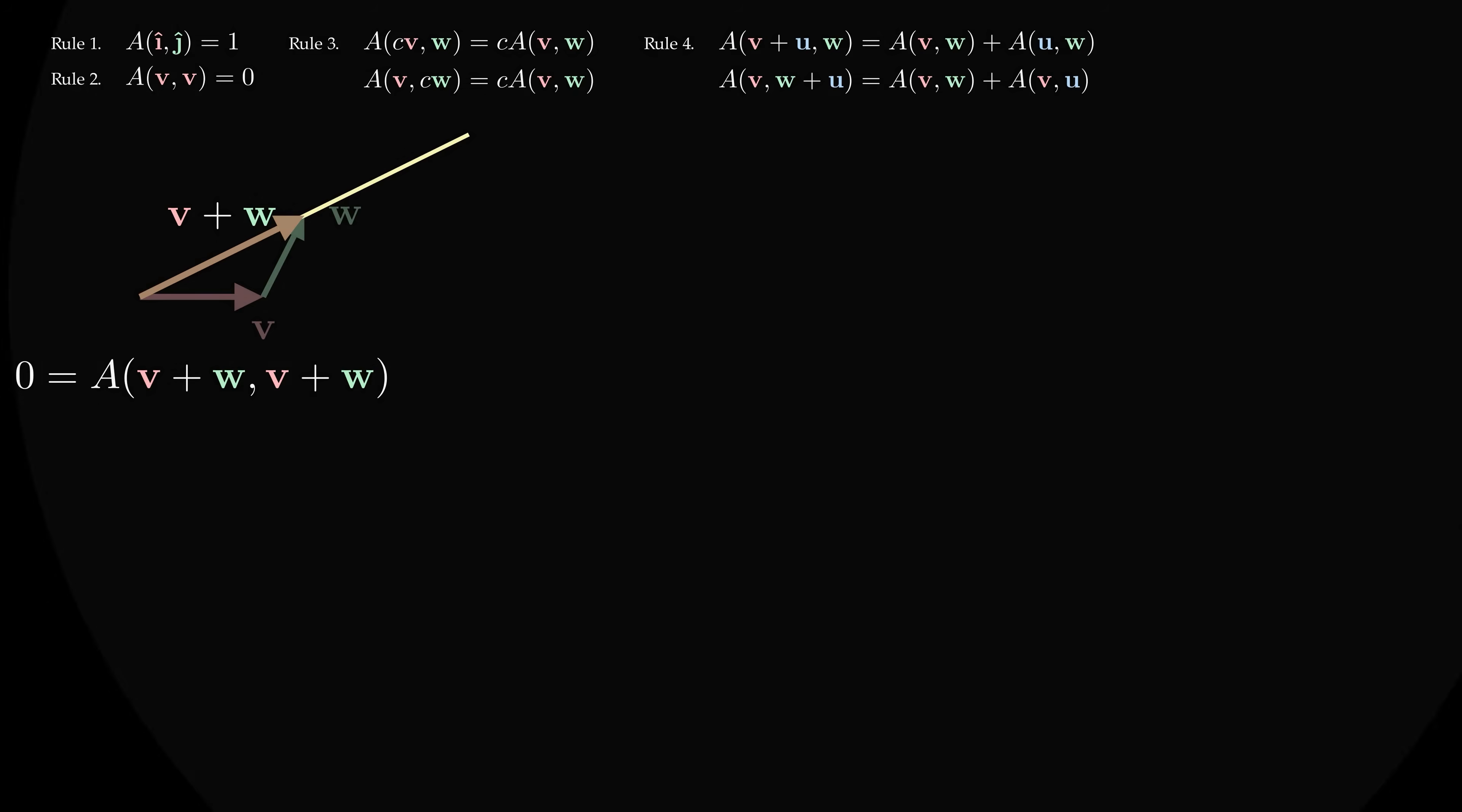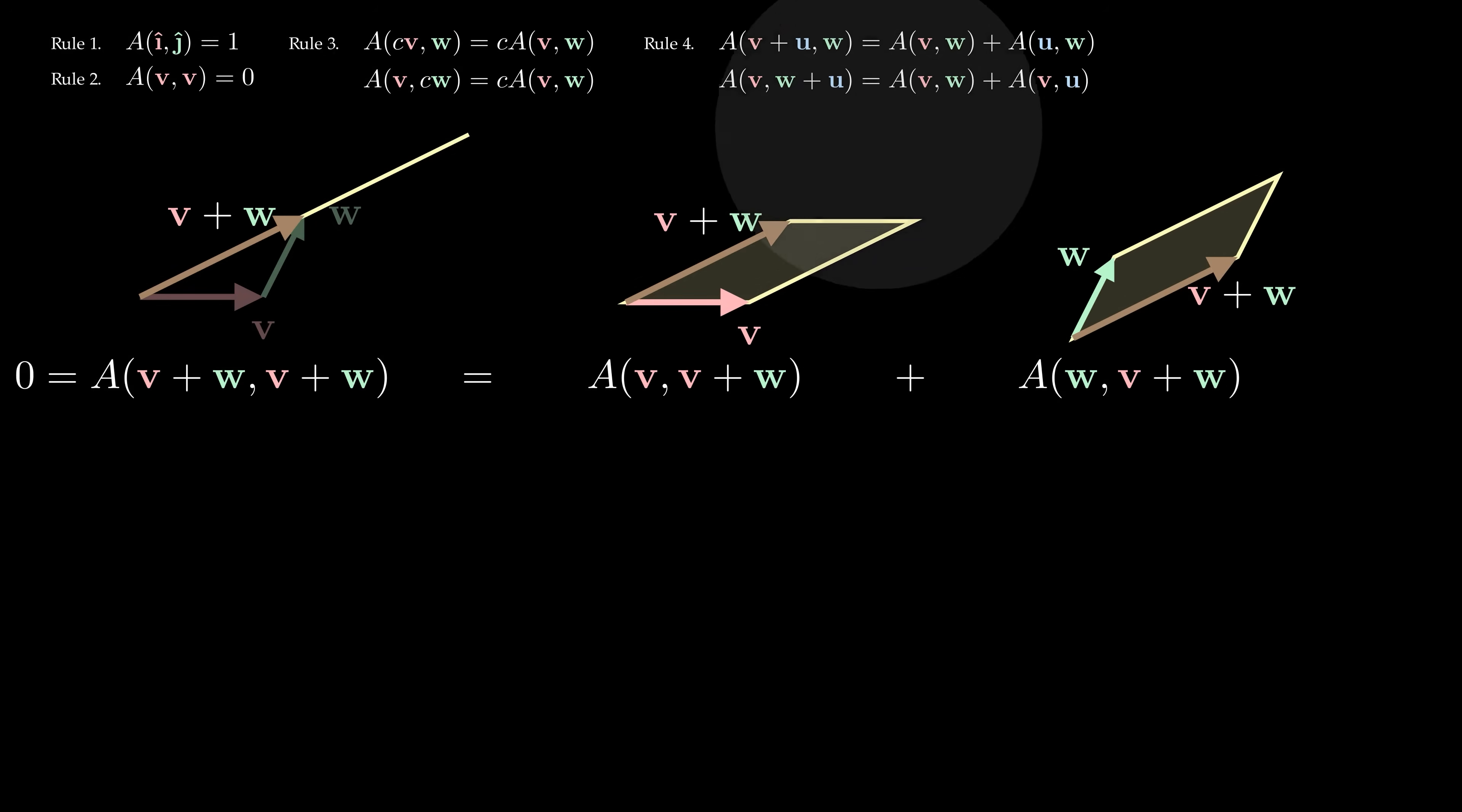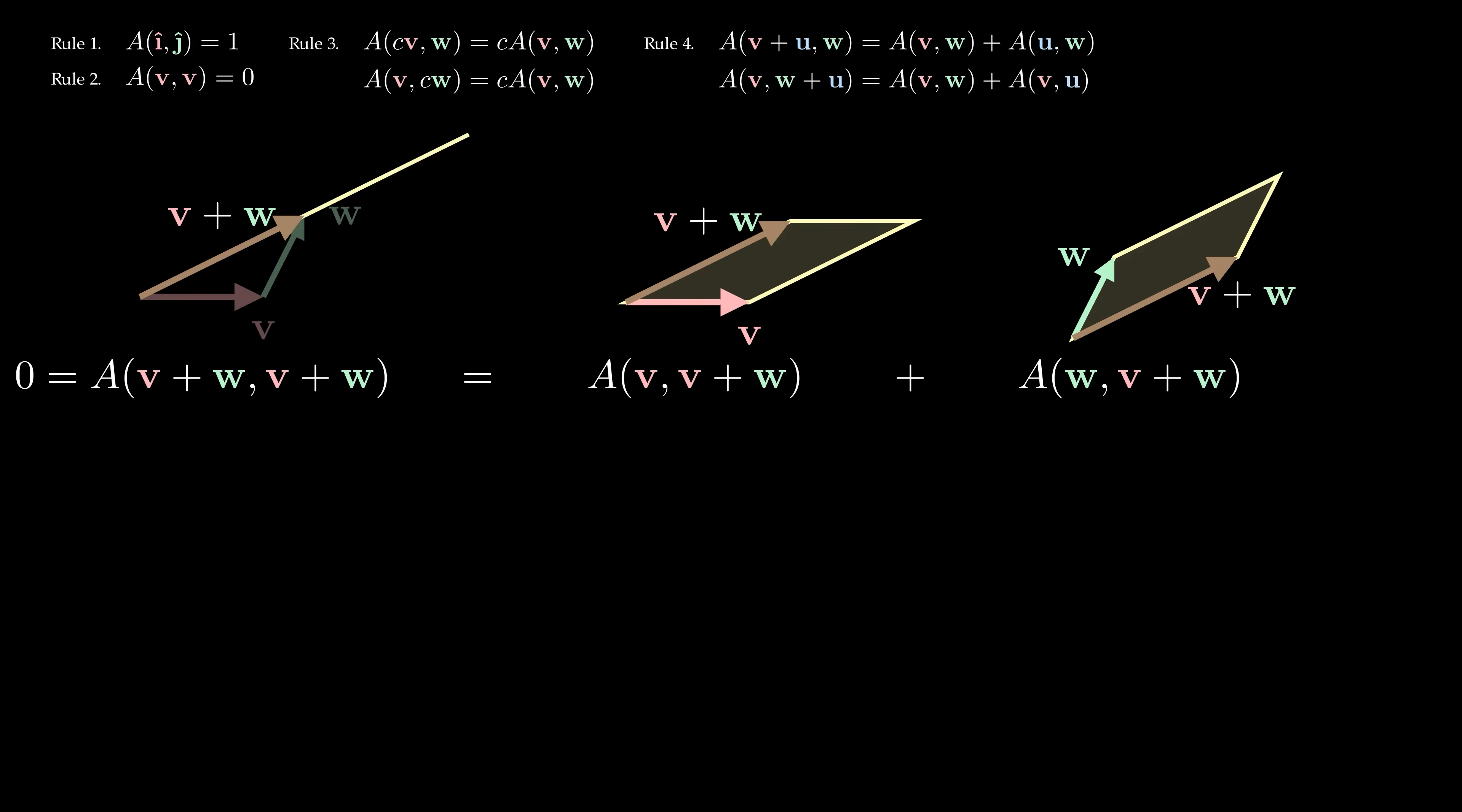Imagine forming a parallelogram using the same vector v plus w twice, which has zero area by rule 2. Applying rule 4 in the first slot then lets us split this area term into two area terms. We can then apply rule 4 again, since there's still a v plus w in the second slot. And this gives us four area terms.